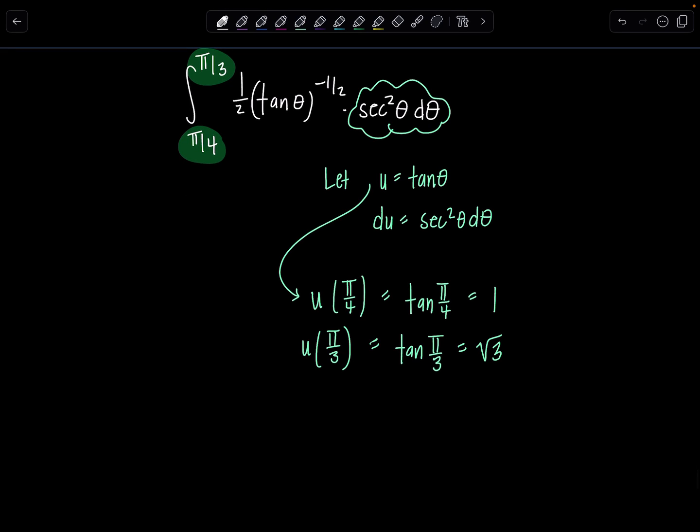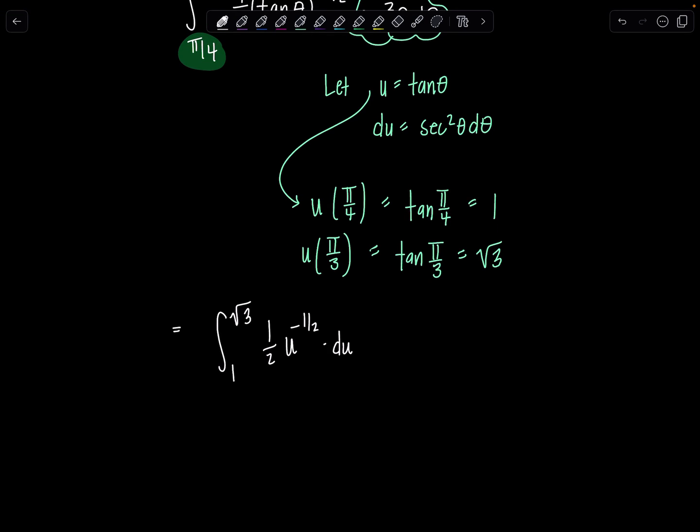So now let's rewrite our integral all in terms of u. The limits are now one to rad three, one half u to the negative one half du. We're almost there, home stretch. Now we can take the antiderivative. We're going to add one to this exponent and then divide by the new exponent. Adding one to negative one half makes it a positive one half. Dividing by one half is the same as multiplying by the reciprocal two over one. And then this all gets evaluated from one to rad three.